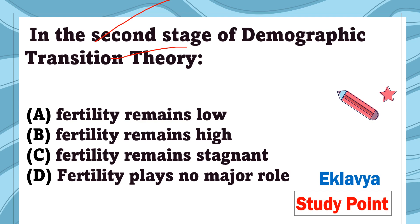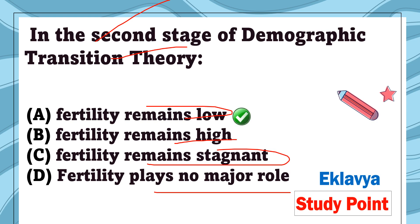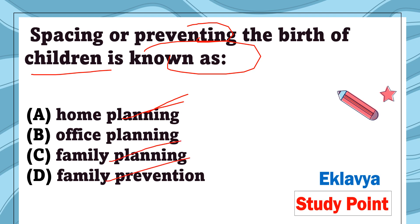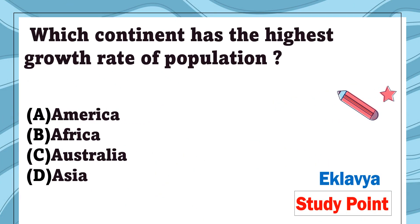Question 14: In the second stage of demographic transition theory — fertility remains low, fertility remains high, fertility remains stagnant, or fertility plays no major role. The correct answer is fertility remains high. Question 15: Spacing, or preventing the birth of children, is known as — home planning, office planning, family planning, or family prevention. The correct answer is family planning.